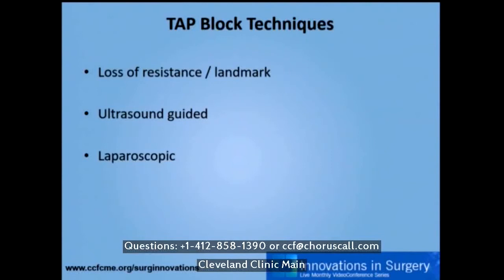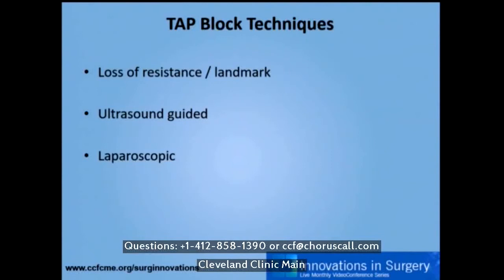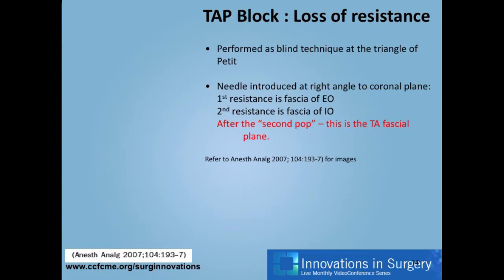There are three main techniques for performing a TAP block: the loss of resistance or landmark technique, ultrasound-guided, or laparoscopic guidance. Loss of resistance is performed as a blind technique at the triangle of Petit, between the lower border of the intercostal margin and the iliac crest at the mid-axillary line. The needle is introduced at a right angle to the coronal plane. The first resistance is the fascia of the external oblique, and the second resistance is the fascia of the internal oblique. When you feel the second pop, that is the plane where the local anesthetic is injected.